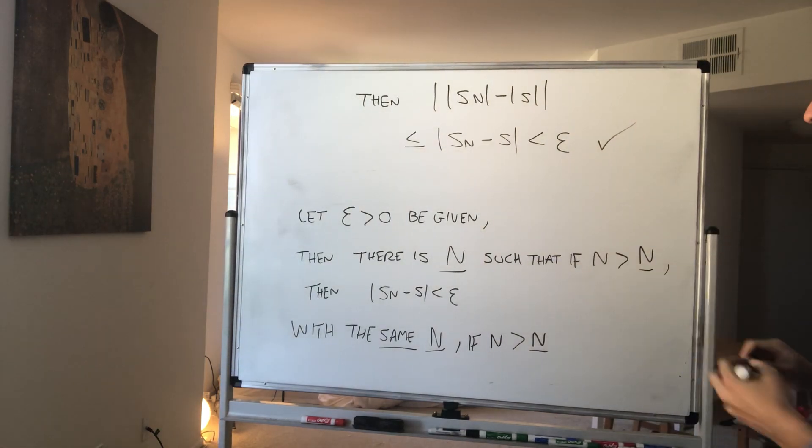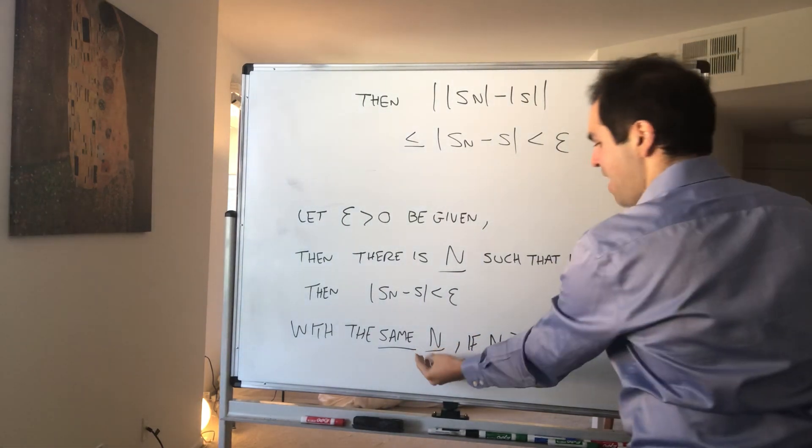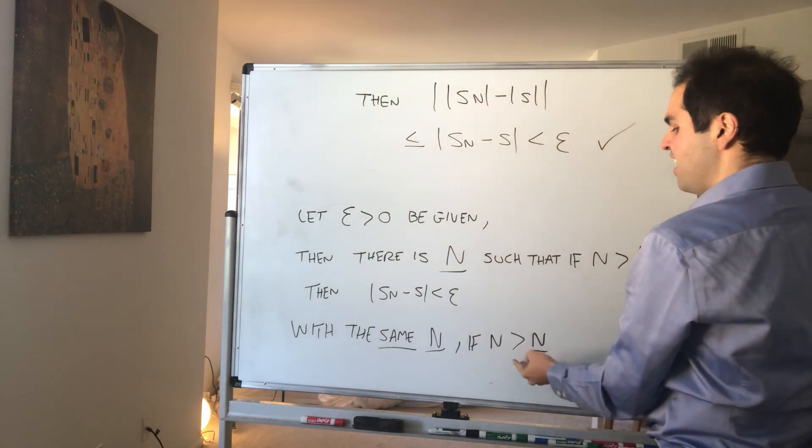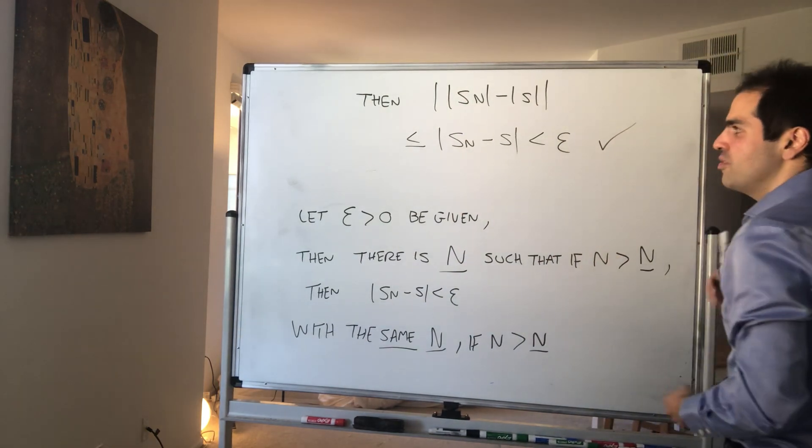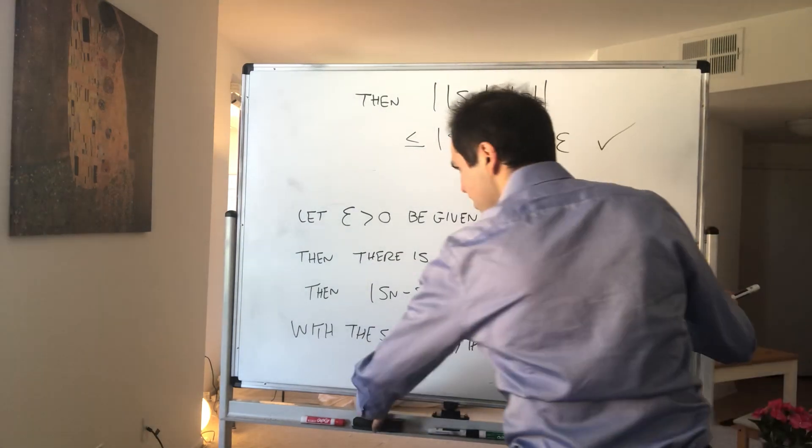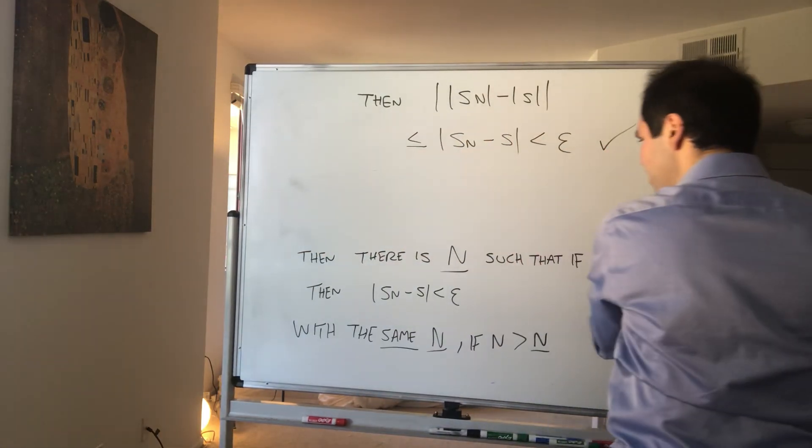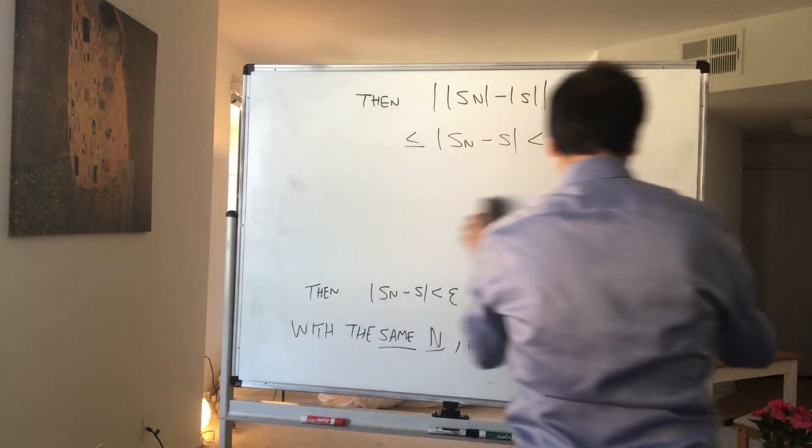And then you're done, because you wanted to find some N such that if n is bigger than capital N, then the difference between absolute values is less than epsilon. So you're done.